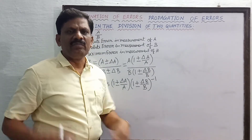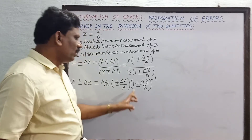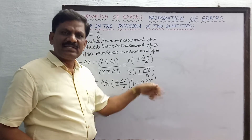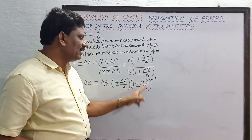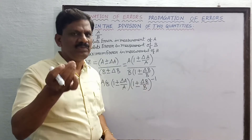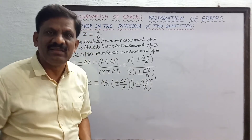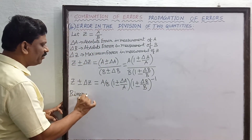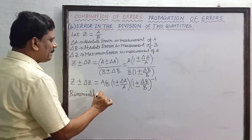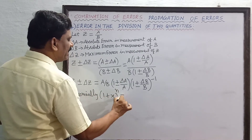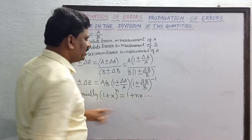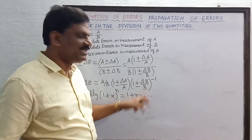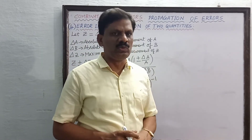So I can write this as the product into 1 plus or minus delta b by b, whole power minus 1. Now in binomial theorem, you must have studied that 1 plus x whole power n is equal to 1 plus nx plus other terms. Since delta b by b is a fractional error and it is negligibly small, we retain only the first two terms. So binomially, 1 plus x whole power n equals 1 plus nx.